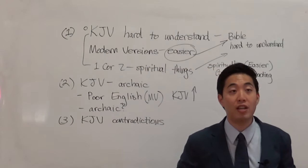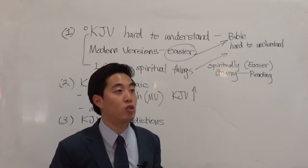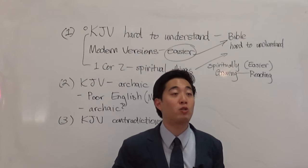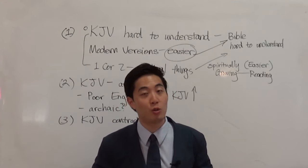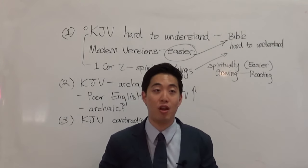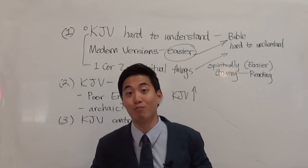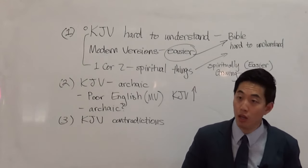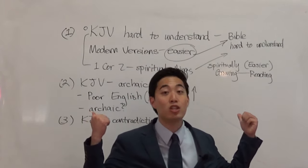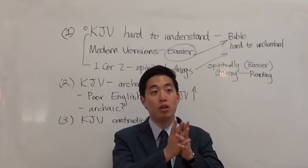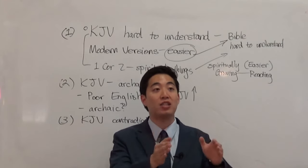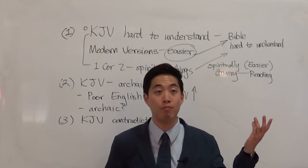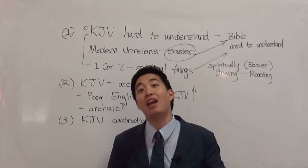Scholars pick and choose Greek lexicons just like they pick and choose manuscripts to prove a textual error — but you can find other lexicons that support your KJV reading. The right Bible is found by looking at history. The Inspiration and Preservation video establishes there must be a perfect, pure word of God, and since all Bibles differ from each other, the KJV is the best candidate when you look at all the evidence.